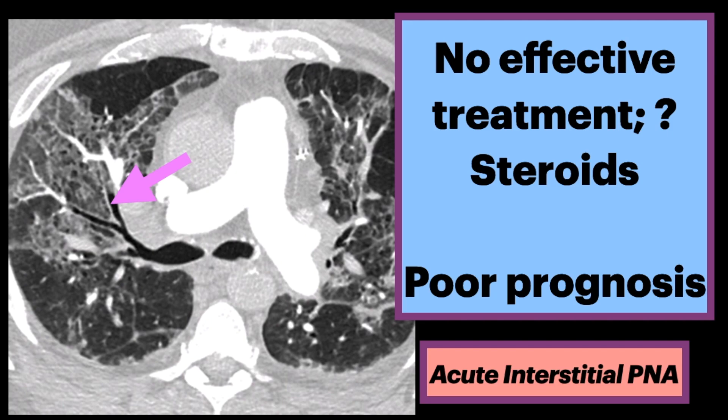AIP is not a pathologic diagnosis, but requires histologic findings of diffuse alveolar damage, absence of an identifiable etiology, presence of acute symptoms, and pulmonary opacities on imaging. Unfortunately, no effective treatment is known. Steroids produce a variable response. Prognosis is poor, with a high mortality rate.